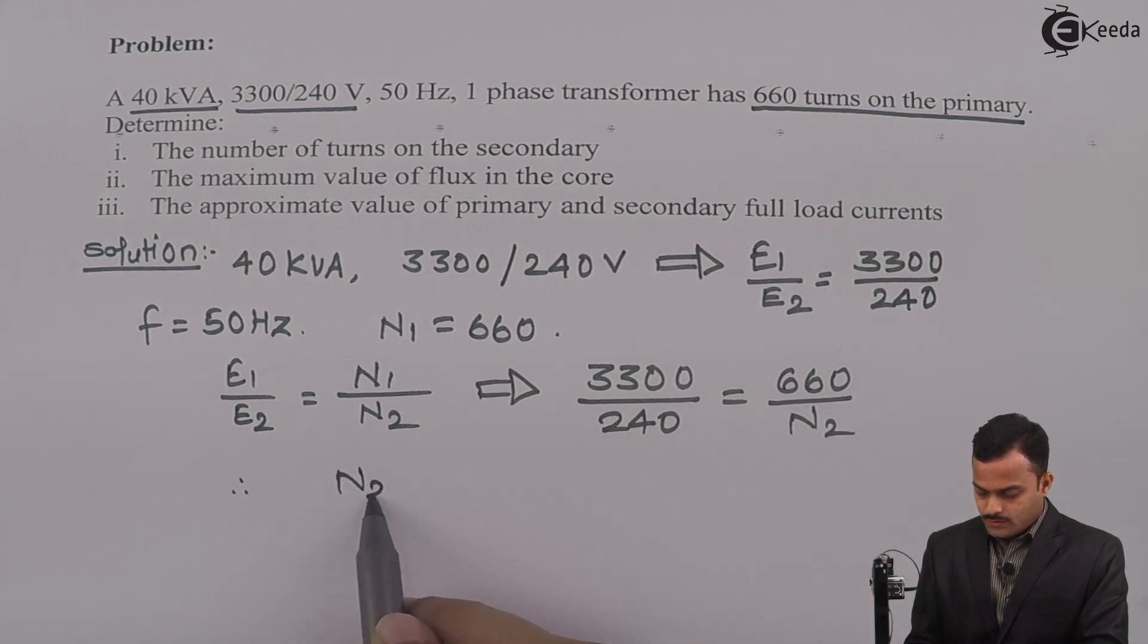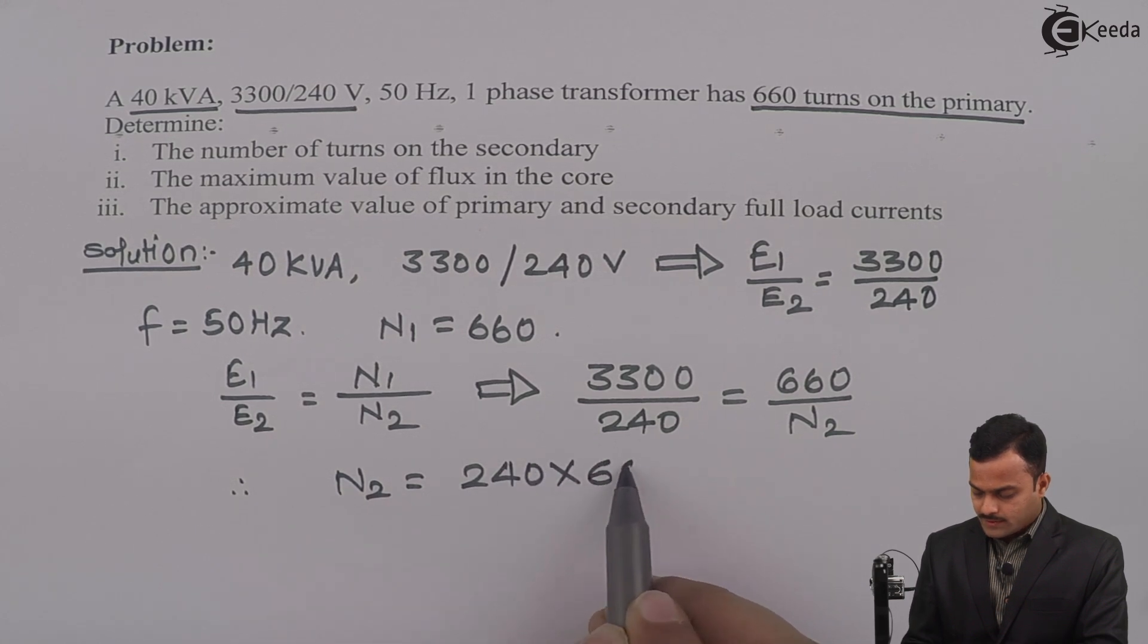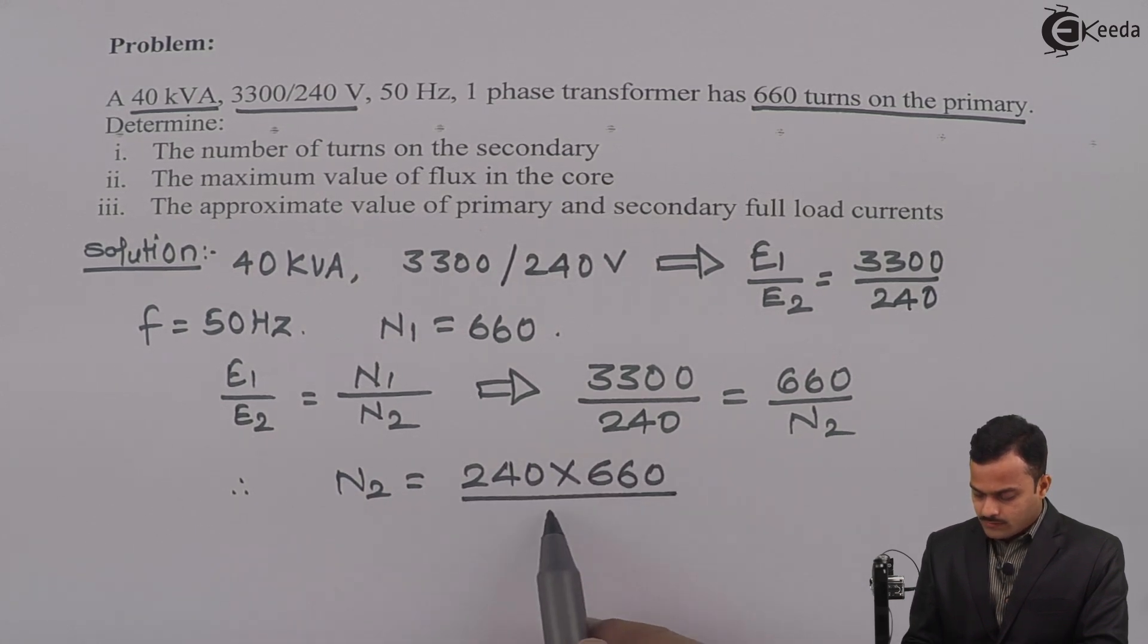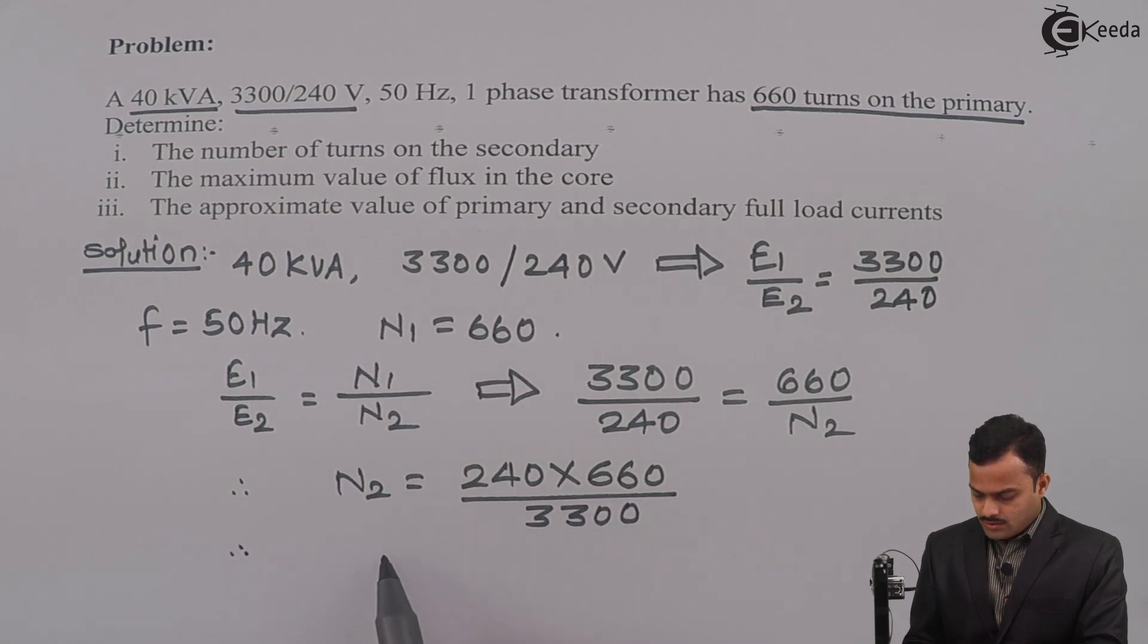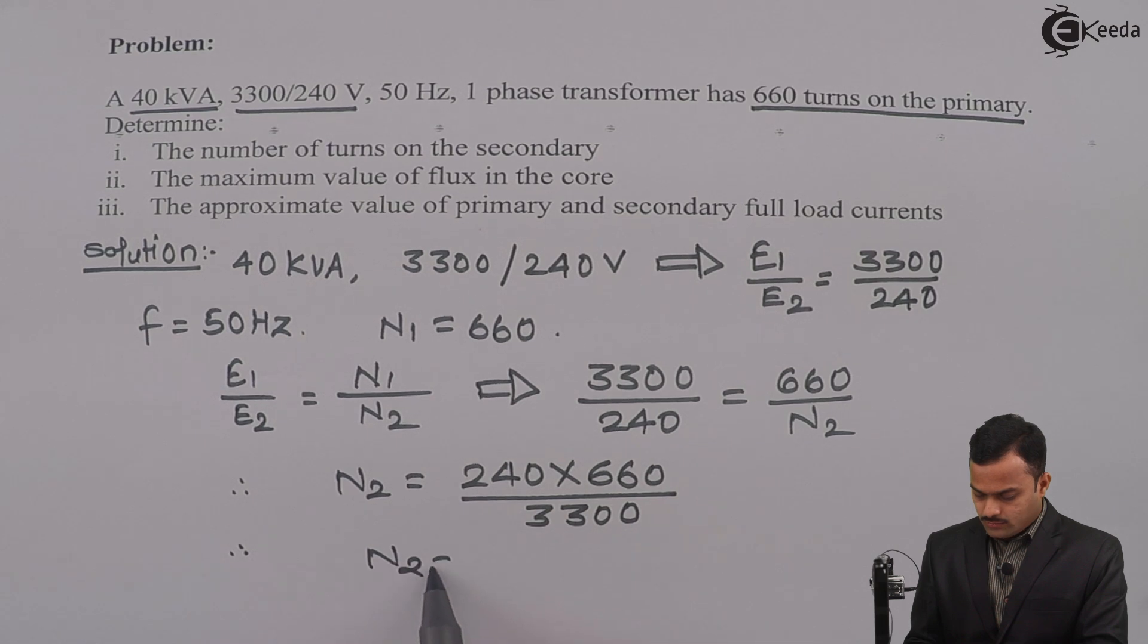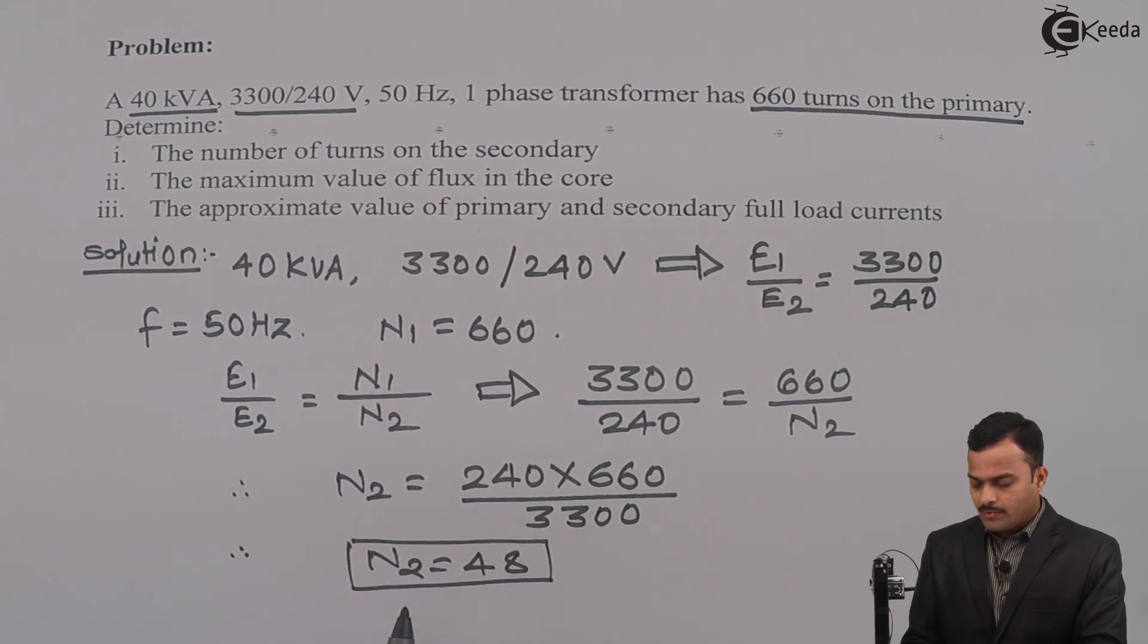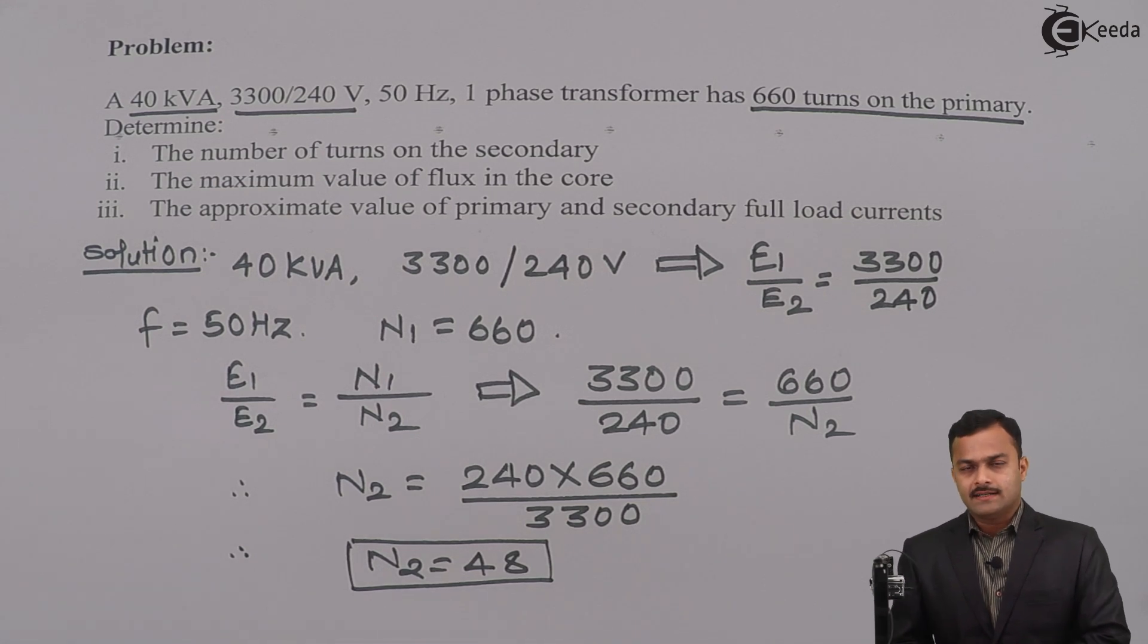So how to get N2? It's very simple. So if we solve, you will get N2 equal to 48. So number of turns on the secondary side are 48.